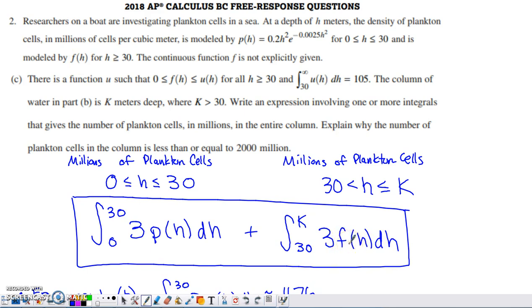And that's going to be the number of millions of plankton cells from a depth of 30 to a depth of k. And they don't specify what k is. But this is the expression involving one or more integrals that gives us the number of millions of plankton cells in the entire column.